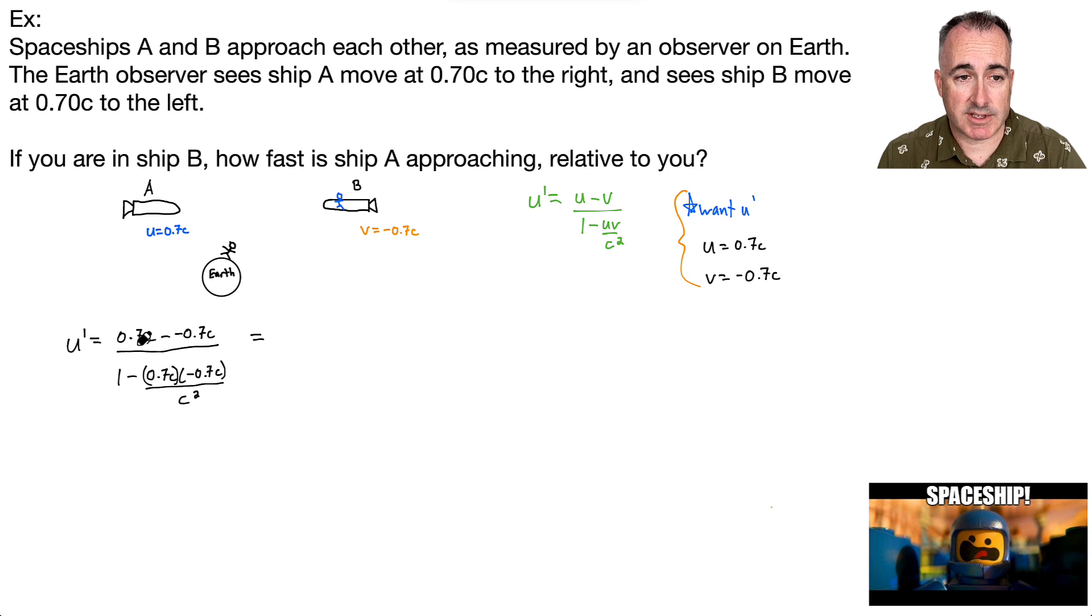We've got 0.7 C plus 0.7 C, so that's 1.4 C. All that over 1, and let's see, a minus times a minus is a plus. So I've got 1 plus, and 7 times 7 is 49, so I've got 0.49. I got C squared over C squared. Notice then the C squareds cancel out. That's actually why these equations are the way they are, because as long as you have your speeds in terms of C, then they tend to cancel out, which is really nice.